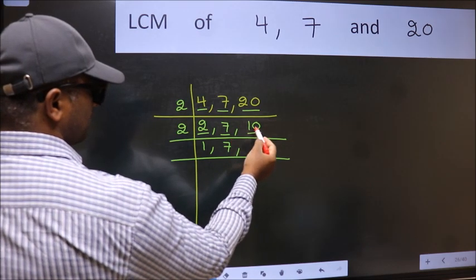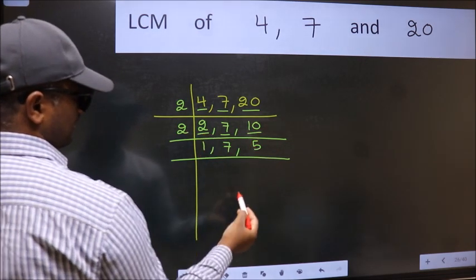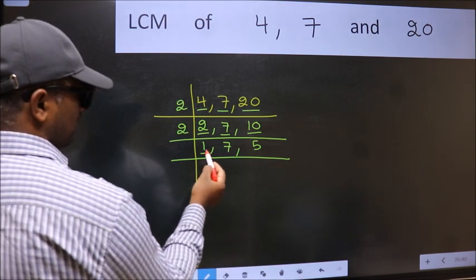The other number 10, when do we get 10 in the 2 table? 2 times 5 is 10. Now we got 1 here.